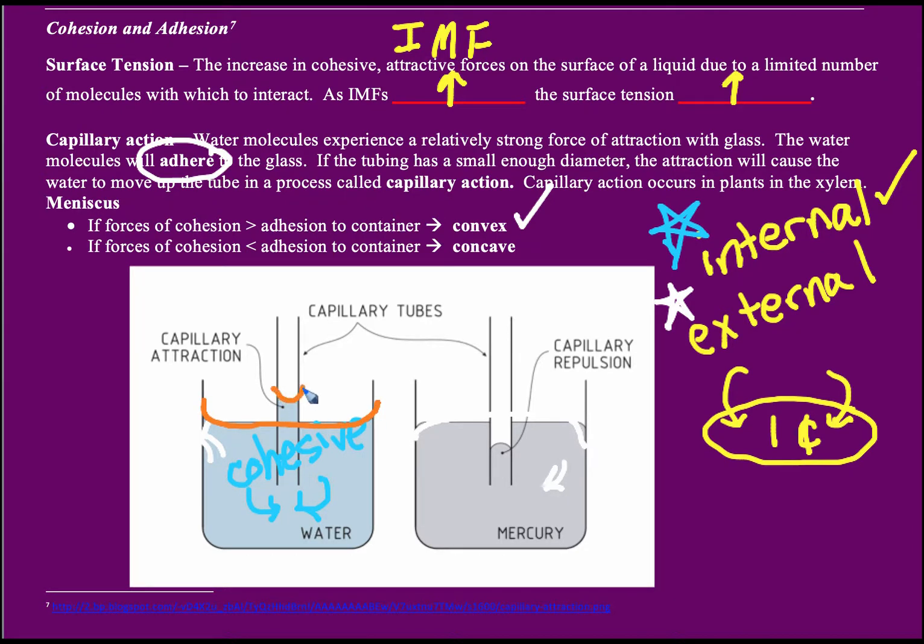With mercury we would have a convex meniscus and you would read it at the top of the meniscus. With water we always read at the bottom of the meniscus.